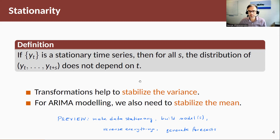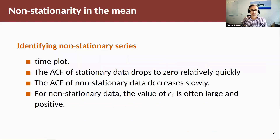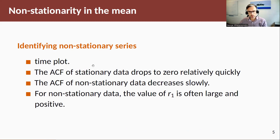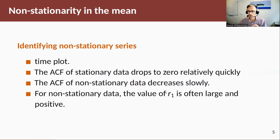To identify whether data is stationary or not, looking at the time plot is quite informative. Another approach is to look at the autocorrelation function (ACF). For stationary data, the ACF drops very quickly to zero. For non-stationary data it decreases very slowly. Also, for non-stationary data the first autocorrelation will be very high and positive.